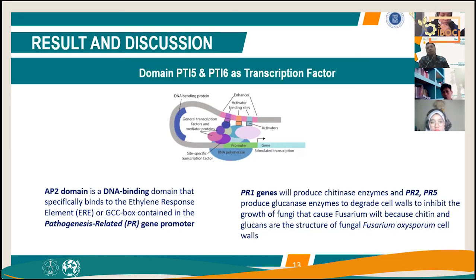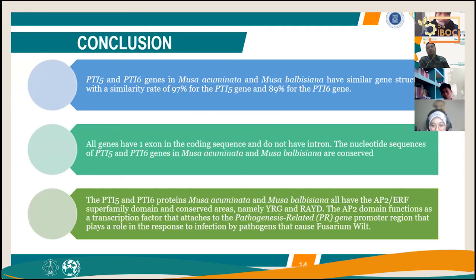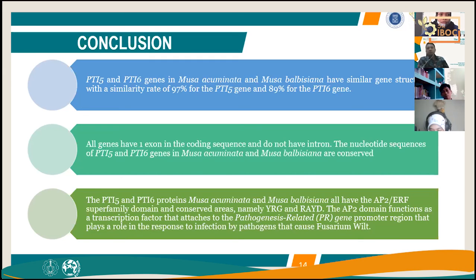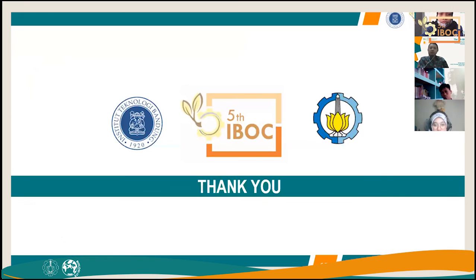PTI-5 and PTI-6 are transcription factors; their AP2 domain specifically binds to the ethylene response element (ERE), also called the GCC box, contained in pathogenesis-related gene promoter regions. PR1 genes produce chitinase enzymes; PR2 and PR5 produce glucanase enzymes, which degrade the cell walls of Fusarium oxysporum — since chitin and glucan are structural components of the fungal cell walls. Conclusion: PTI-5 and PTI-6 in Musa acuminata and Musa balbisiana have similar gene structures (97% identity for PTI-5, 89% for PTI-6), each with one exon and no introns. All proteins contain AP2/ERF superfamily domain with conserved WRG and RAWD regions, functioning as transcription factors in pathogen defense response.